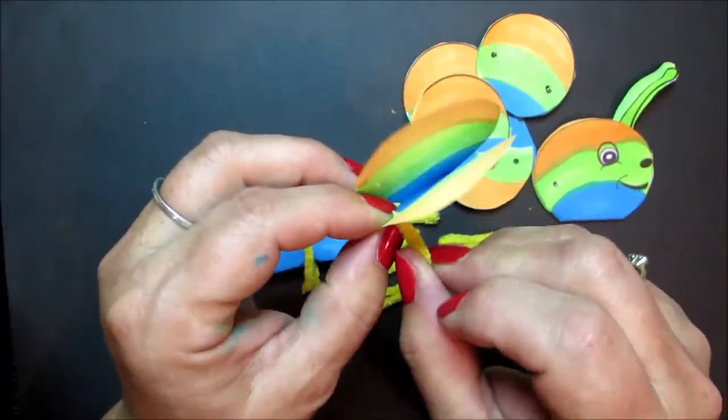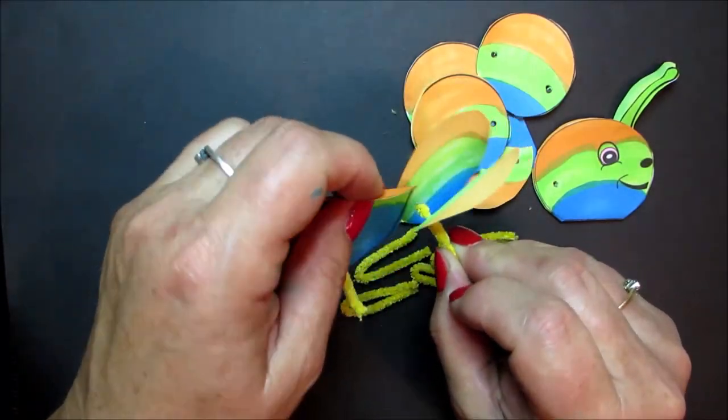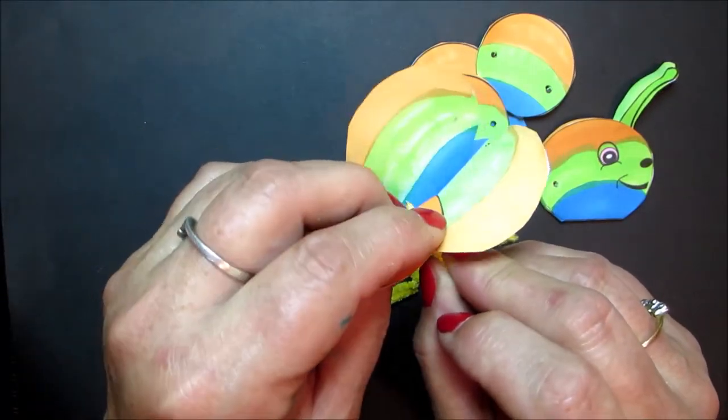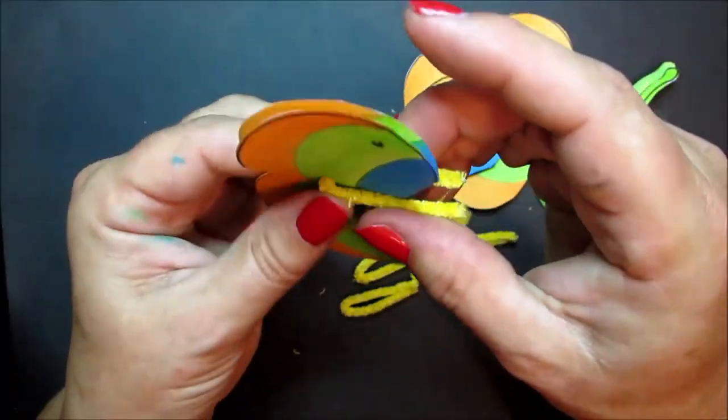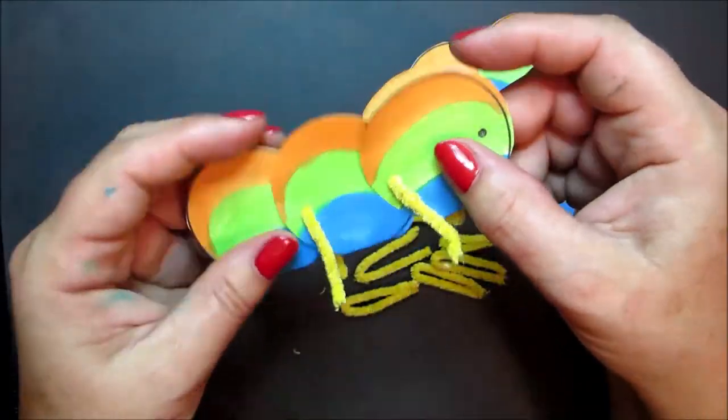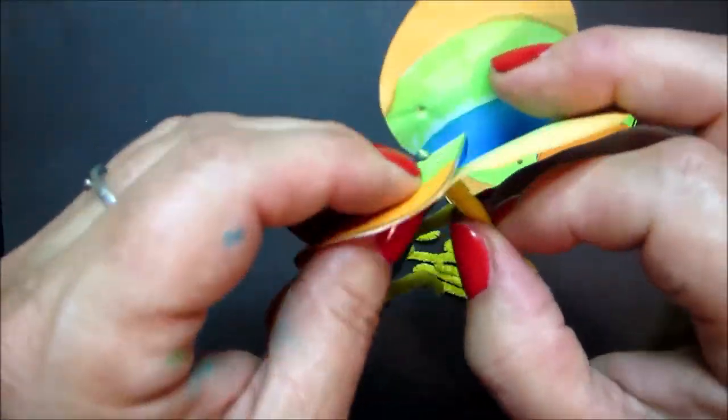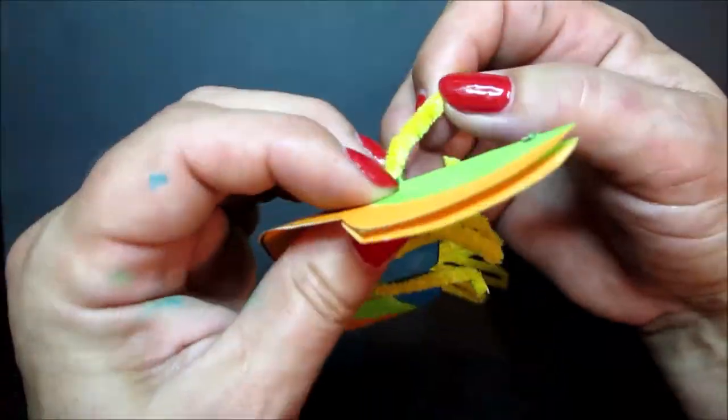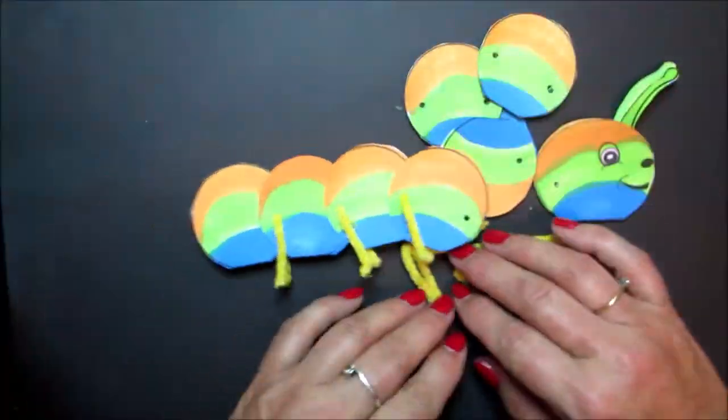Push through one side of the front side of the body section. Push through both sides of the previous body section. And then through the back side of this body section. Pull through and then bend his feet afterwards. So repeat this all the way through, through one side, both sides, back side, and then bend the feet.